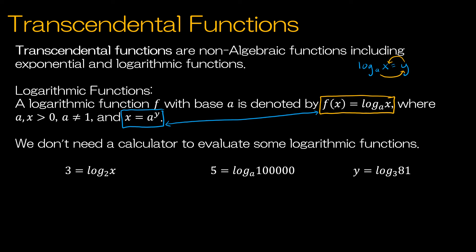I call it the swirly method. In the same way, if I wanted to take a function a to the y is equal to x and turn it into a logarithmic function, keep in mind that the base is always the base. So here the base is a and here the base is a — the base of a logarithm and the base of an exponential function are the same. Turning this into a logarithm, I would keep log base a, and then of x is equal to y. So we're swirling in order to find how to rewrite.